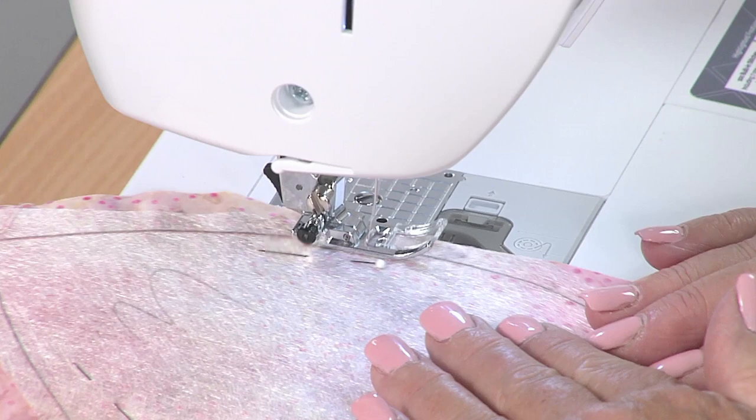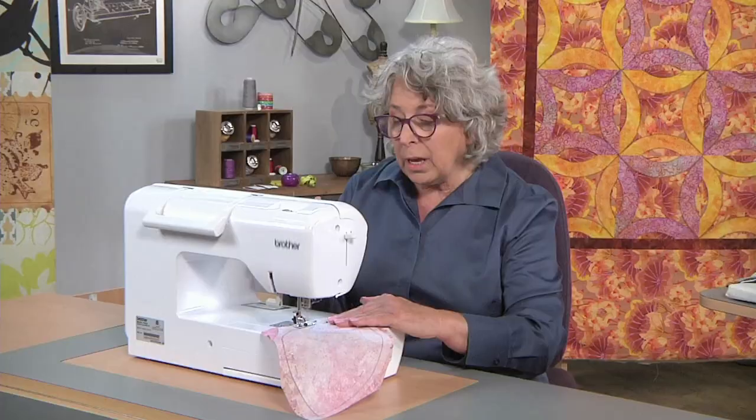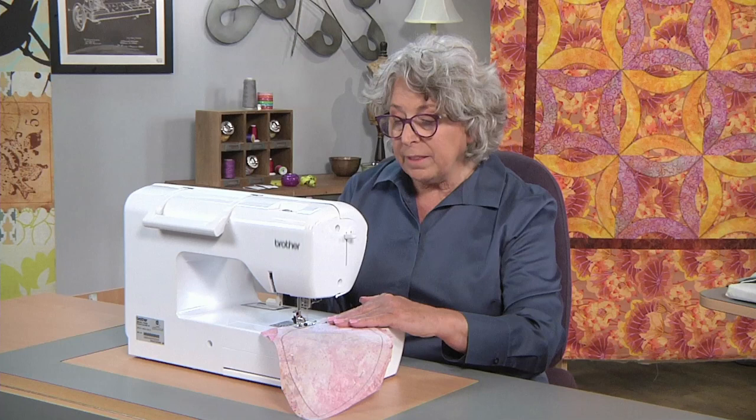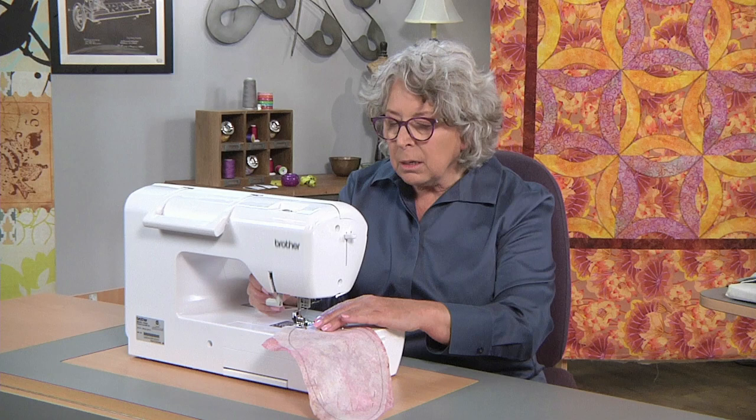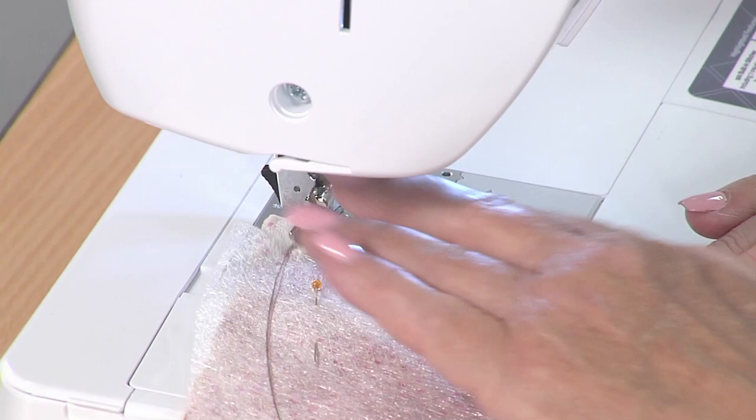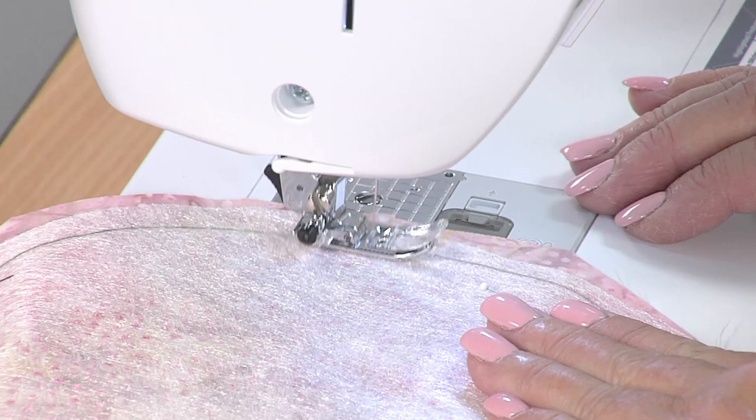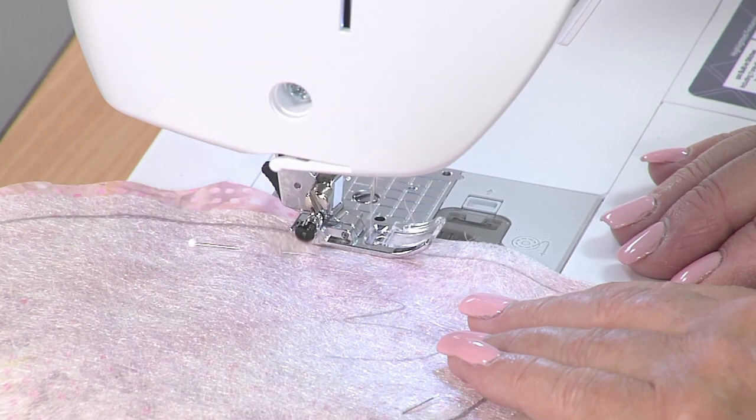I just want a shorter stitch length so that it holds it together nicely. I'm going to put the foot down and I'm just going to let it go. So I'm actually sewing right on the line. This is why you didn't want to cut the line out. Some people make that mistake and then you don't have anywhere to sew. So I'm still just sewing right on that line that I drew, all the way around.